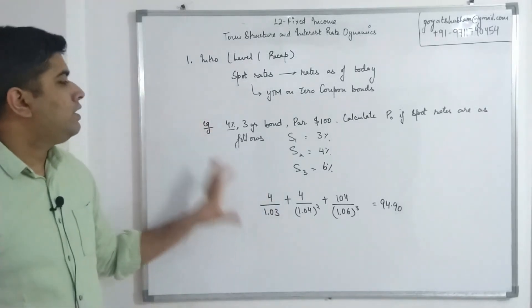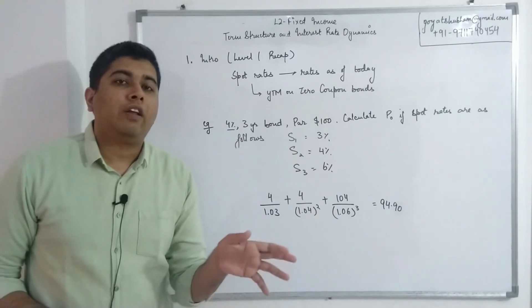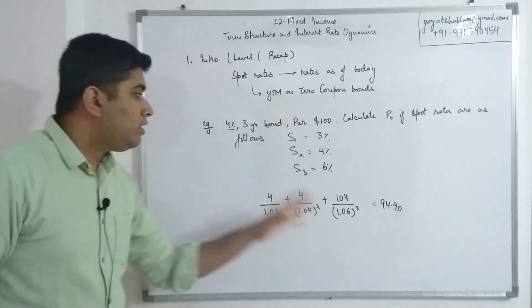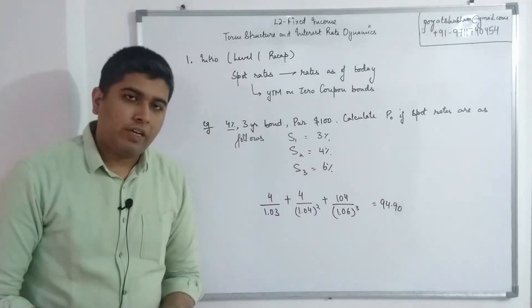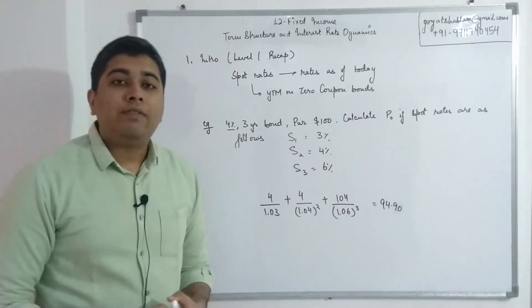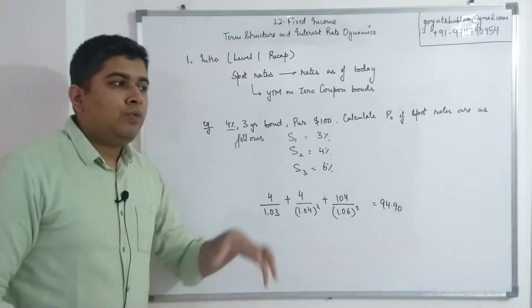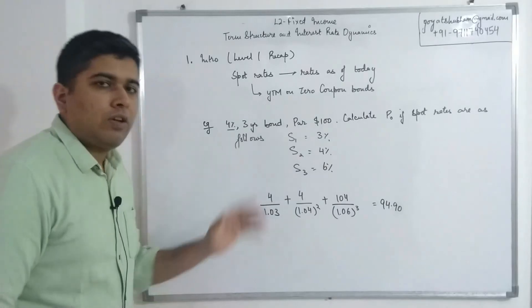So I hope this is clear. This is something that was introduced briefly at your level one curriculum itself, so this is just a recap from level one on how we can use spot rates for valuation of fixed income securities. The next topic we have to recap from level one is the forward rates - how we can use them for valuation and how they interact with the spot rates. Let's look at that.